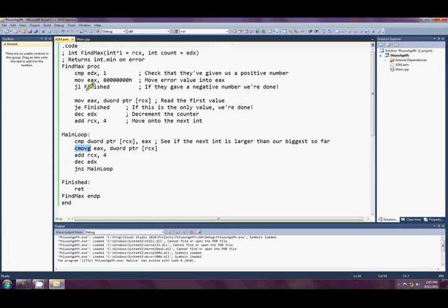All righty, so that's about it really. In order to make one that finds the minimum, I think it's pretty easy. You just change a few of these instructions and you'd have one that finds the minimum instead. And just before we go, I want to point out some of the logic behind the registers that I'm using here.